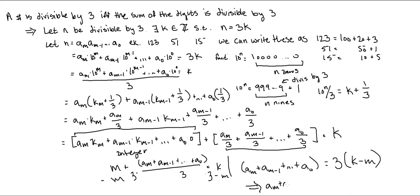On the next half, we'll show that if the sum of the digits is divisible by 3, then the original number is divisible by 3, using a very similar argument.